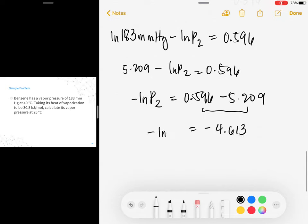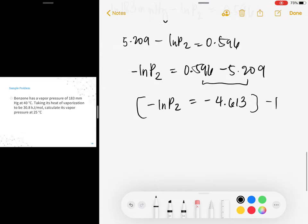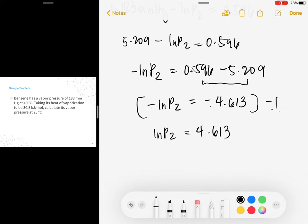Negative ln(P2). The ln shouldn't be negative. So multiply both sides by negative 1. Negative times negative, this becomes positive ln(P2). And negative times negative, this becomes positive 4.613. How do you cancel the ln? Raise it to E. So P2 is now equal to E raised to 4.613.